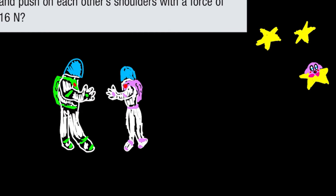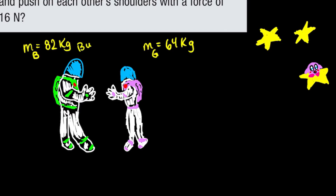Here we have a male astronaut and a female astronaut — let's write down the masses. To distinguish between the two, we can't just use M for both, so we're going to use B for the male and G for the girl. If you look closely, the drawing looks a lot like Buzz, so B for Buzz and G for girl.